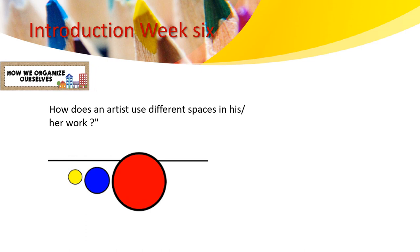How we organize ourselves. How does an artist use different spaces in his or her work? I want you to look at these three circles — the red, blue, and yellow. What do you think the difference is between them? Is the difference between them the size, or only the color, or the shape?